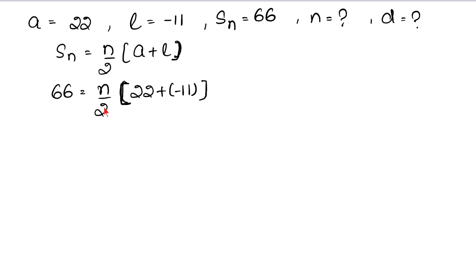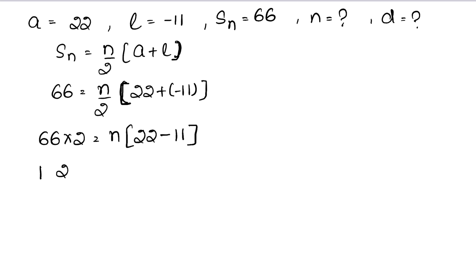Yeh 2 multiply mein chala gaya, toh 66 into 2 equals n into (22 plus minus 11). Calculating: 6 into 2 is 12 carry 1, 6 into 2 is 12 plus 1 is 13 — so 132 equals n into (22 minus 11) which is 11. Ab n kya aa gaya?